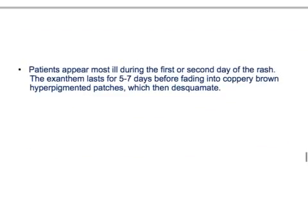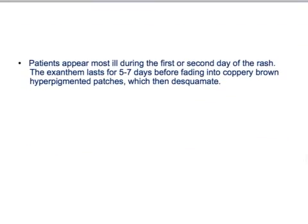Black measles, also called hemorrhagic measles, is a very severe form where you can see purpura and bleeding within the rash. This is very dangerous and requires very cautious monitoring of these patients.